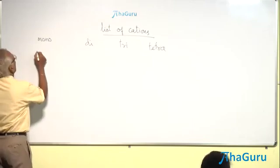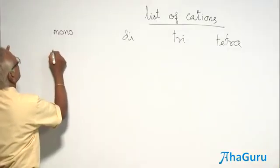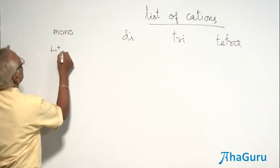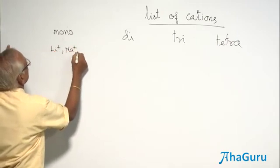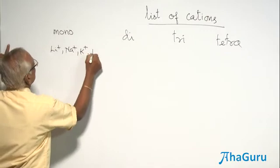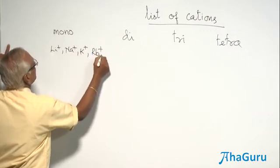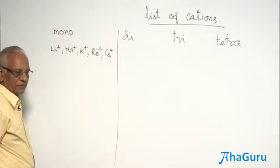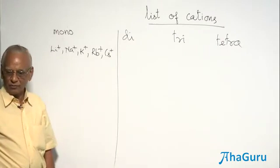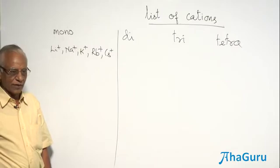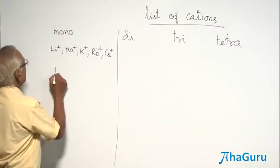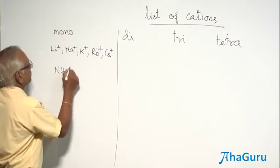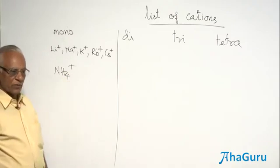Monovalent - all alkali metal ions: Li+, Na+, K+, Rb+, and Cs+. All of them have got monovalent cations. Added to that, we have got ammonium ion, NH4+, which is also a monovalent cation.